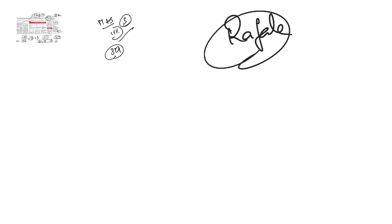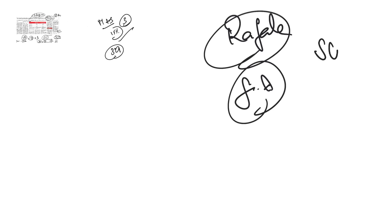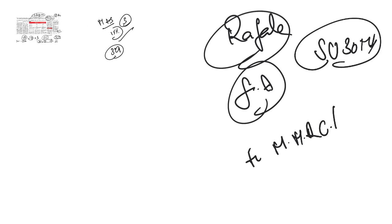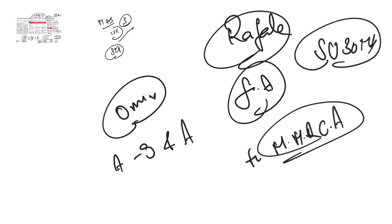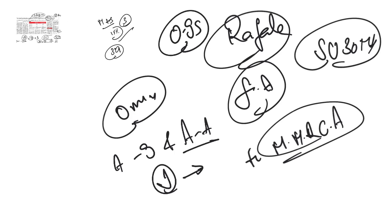The Rafale will be India's most capable fighter aircraft according to the defense ministry, compared with the current best Sukhoi-30 MKI. It is a twin-engine medium multi-role combat aircraft manufactured by French company Dassault Aviation. Dassault says Rafale plays an omni-role — it can perform several actions at a time, carrying both air-to-ground and air-to-air attacks and interceptions during the same flight. It has an onboard oxygen generation system and can perform roles like air supremacy, interdiction, aerial reconnaissance, ground support, anti-ship strike, and nuclear deterrence.